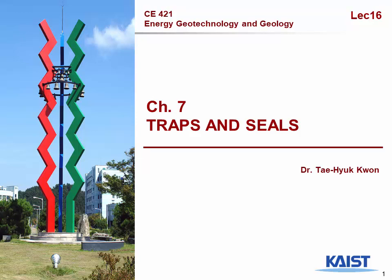Chapter 7 is about traps and seals. In Chapter 6, we've seen the core scale structures, the porosity and permeability, interfacial tension, contact angle, relative permeability, and the production method.